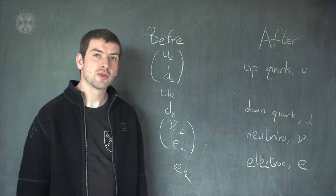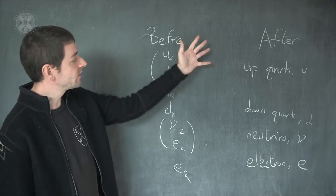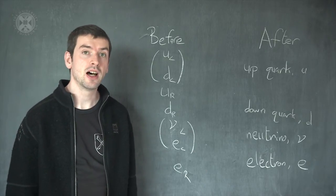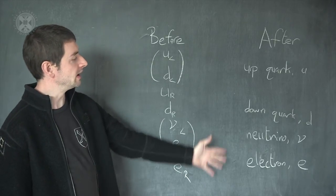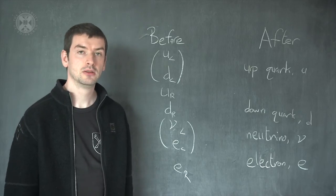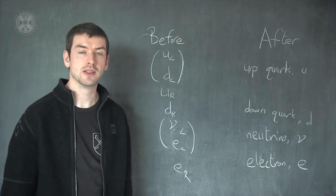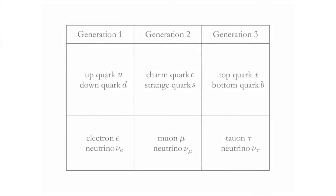Now, there's one further surprise in the standard model: this structure is replicated three times. So this family is just one generation of three generations in the standard model. Here are what the generations look like after symmetry breaking. The first generation is just what we talked about before: there's an up quark and a down quark. In addition, there's an electron and a neutrino.